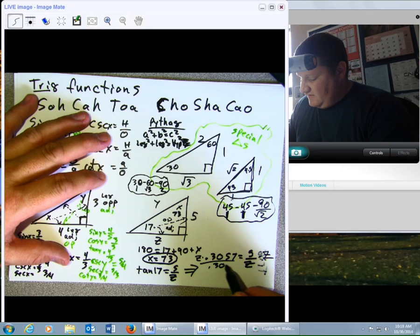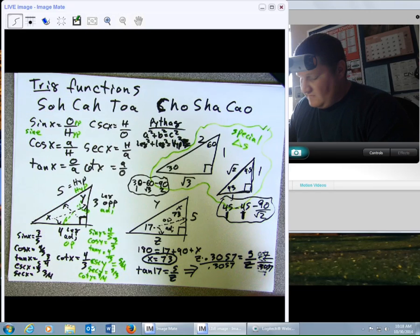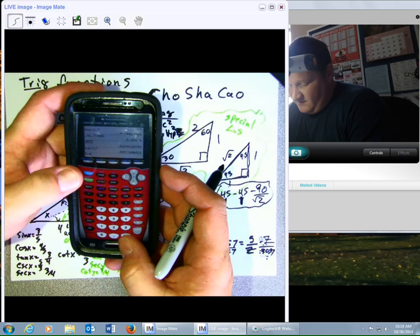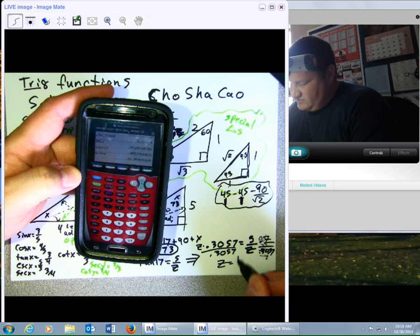So, I take 5 divided by whatever my answer was. And I get Z equals 16.35.